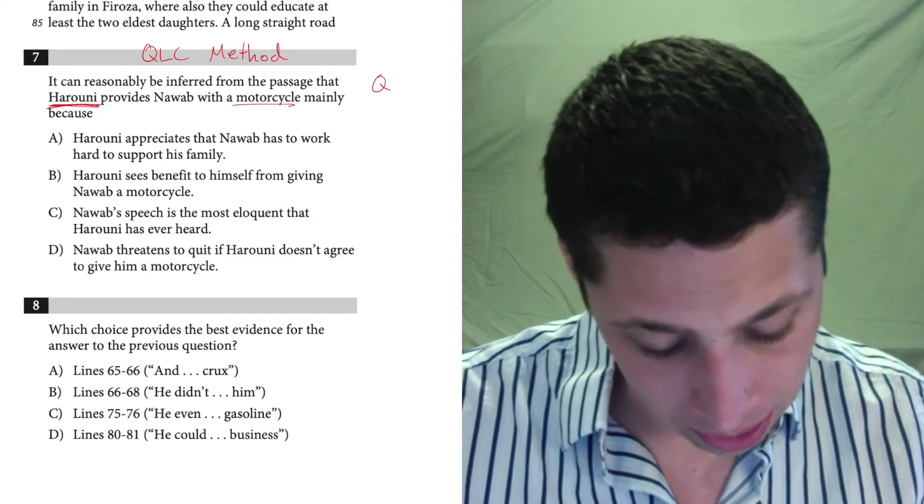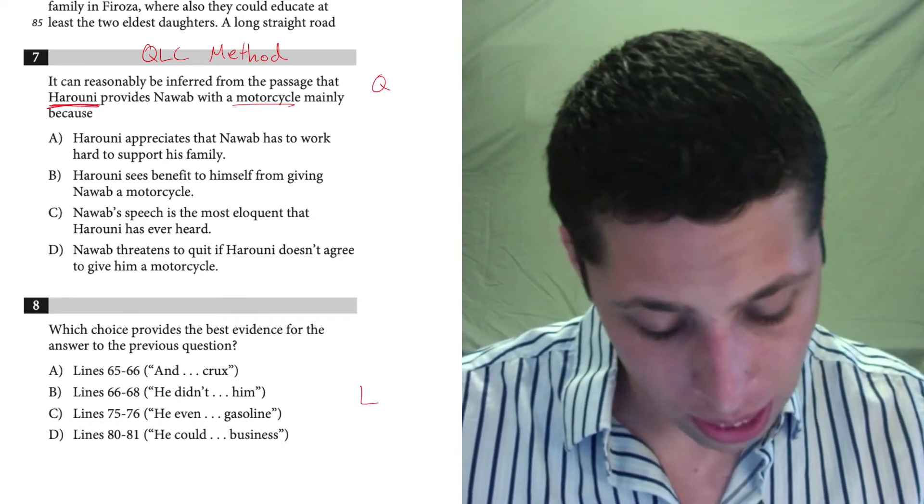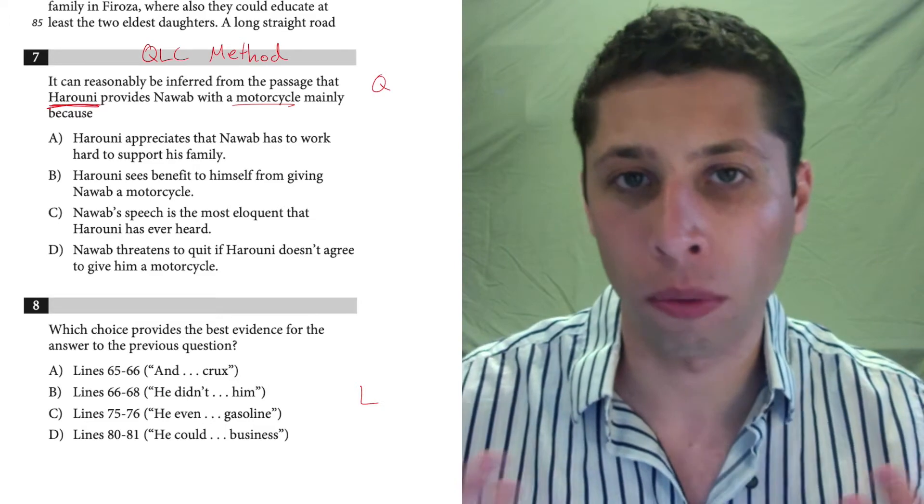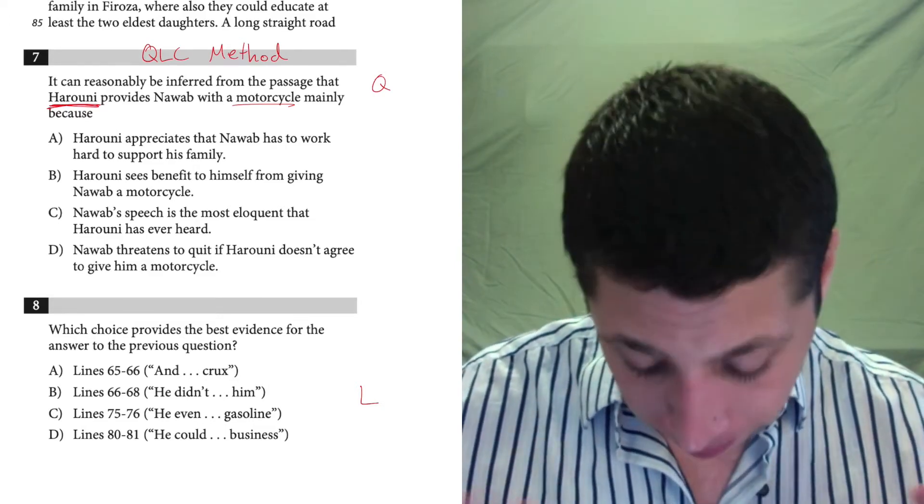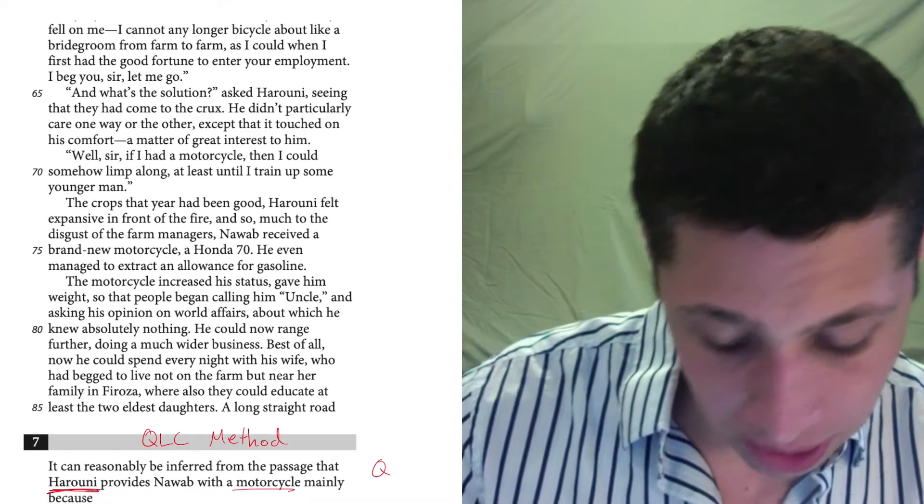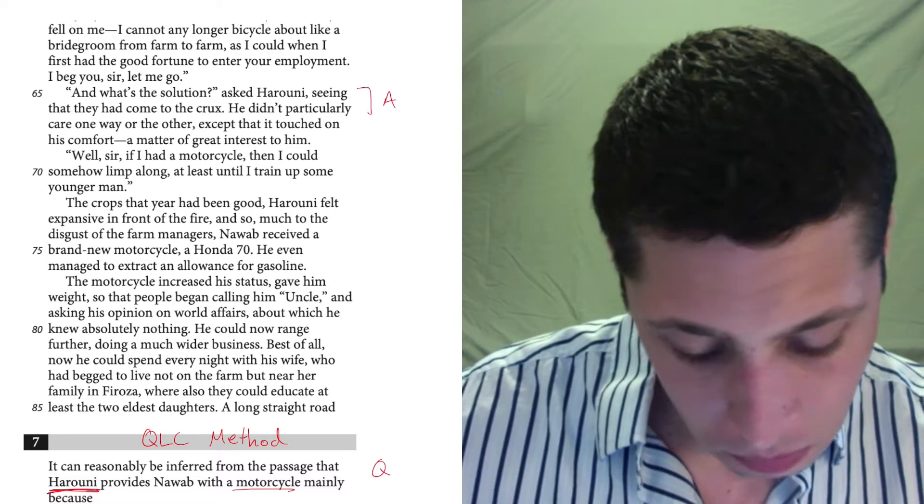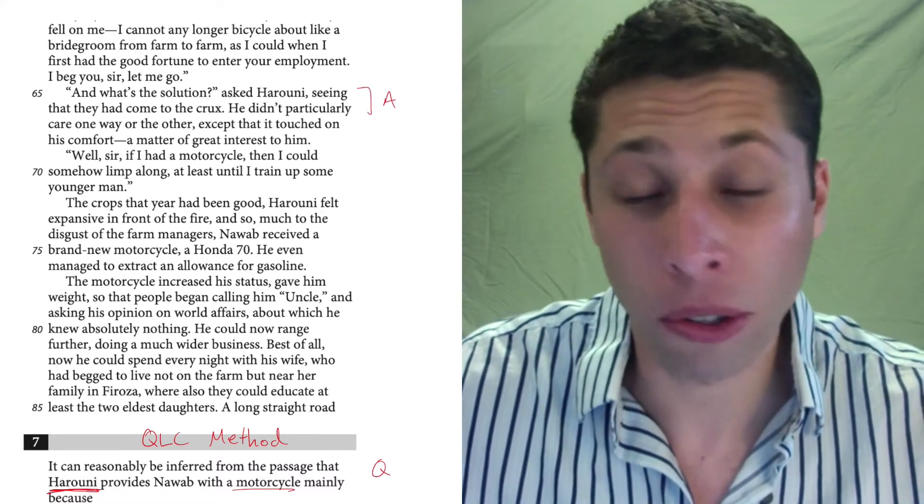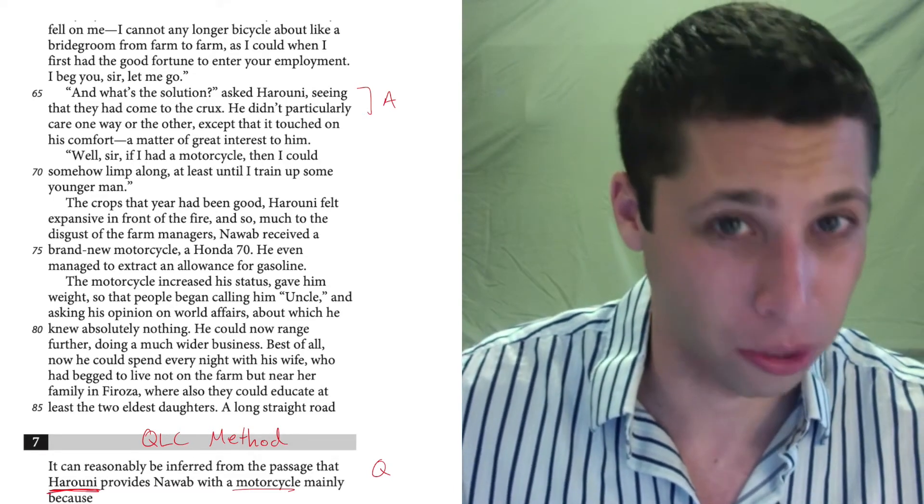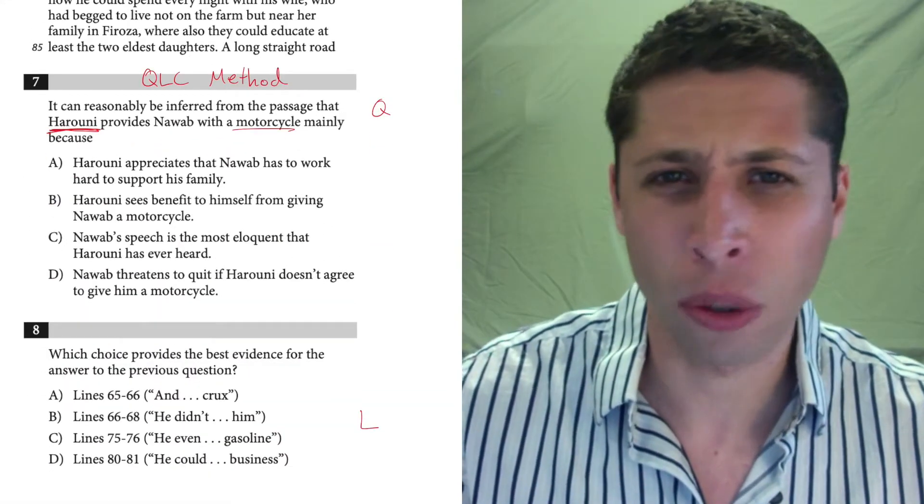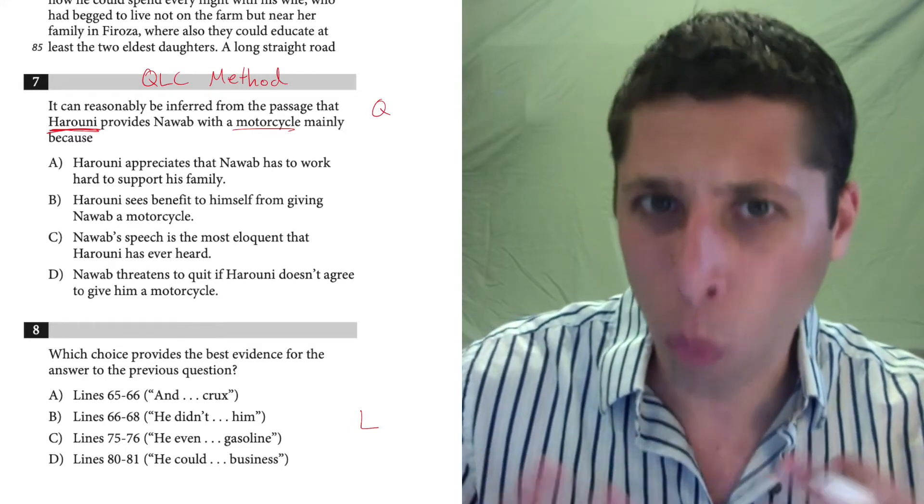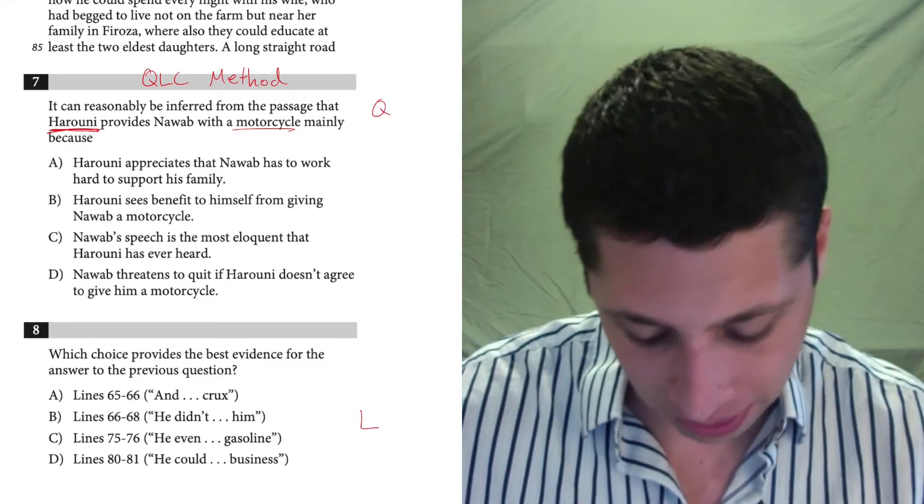That's what I'm thinking about as I read these line references. So there's the Q, Q is for question, L is for line references, and I'm going to look at these things and anything that doesn't tell me a little bit about what Haruni's thinking, I'm going to be able to eliminate. So first off, 65 to 66. And what's the solution, asked Haruni, seeing that they had come to the crux. Well, it doesn't say why he gave him the motorcycle, it's just kind of asking a question. So this to me doesn't feel like it answers the question. It maybe is involved in the plot, but I need evidence of why he decided to give the motorcycle. This is just him asking a question. So that's no good.